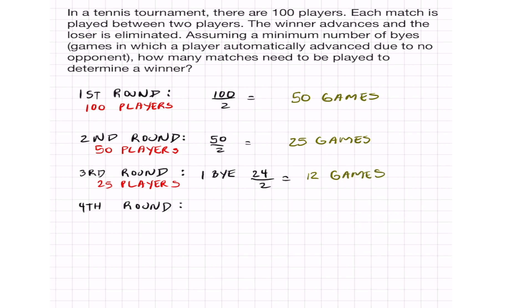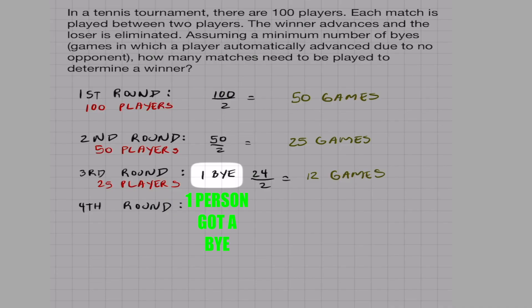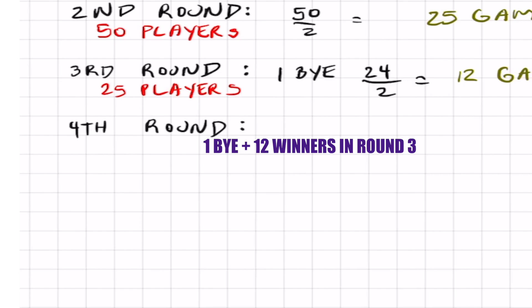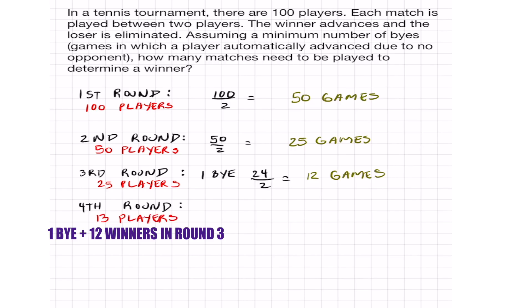So in the fourth round, we have one person that got through a bye, lucky that person, and 12 people eliminated, meaning 12 people are left. So there are 13 players left. And once again, we got an odd number of players, meaning one person is going to get a bye, and we would take 12 divided by 2, which equals 6 games.